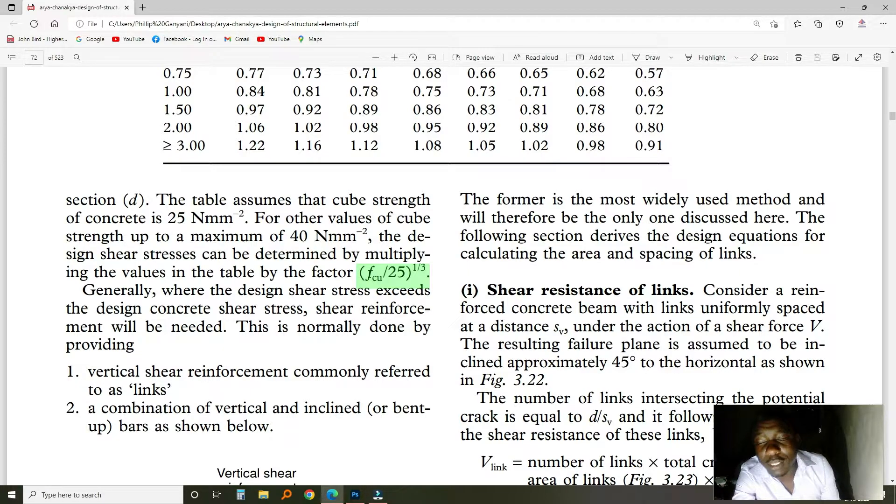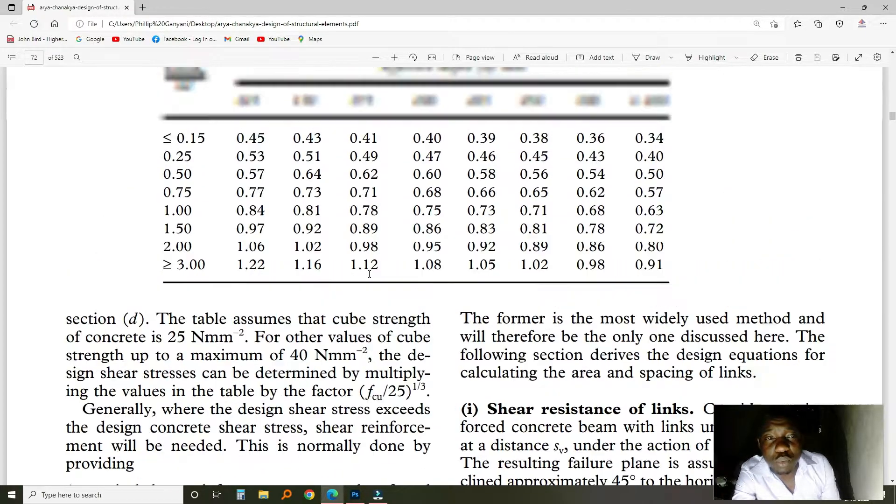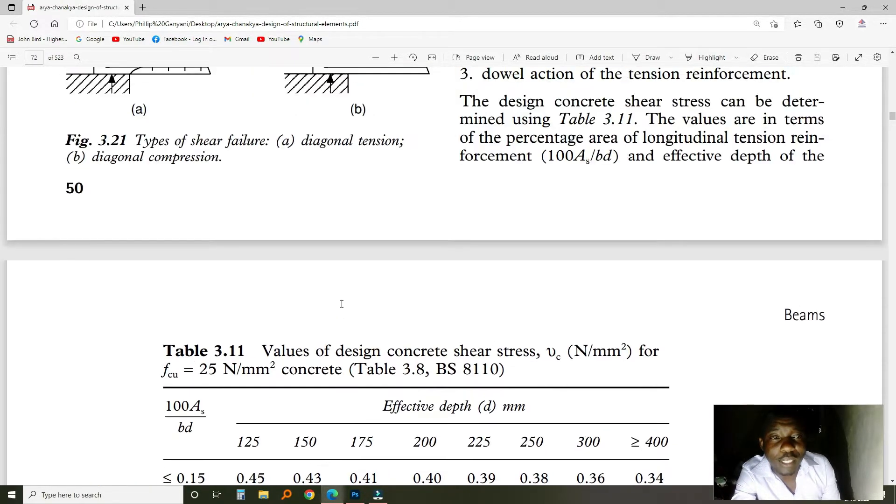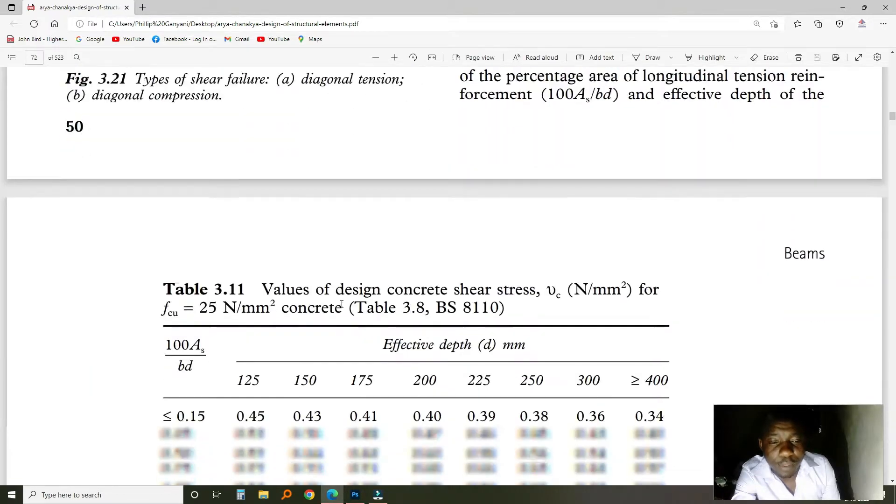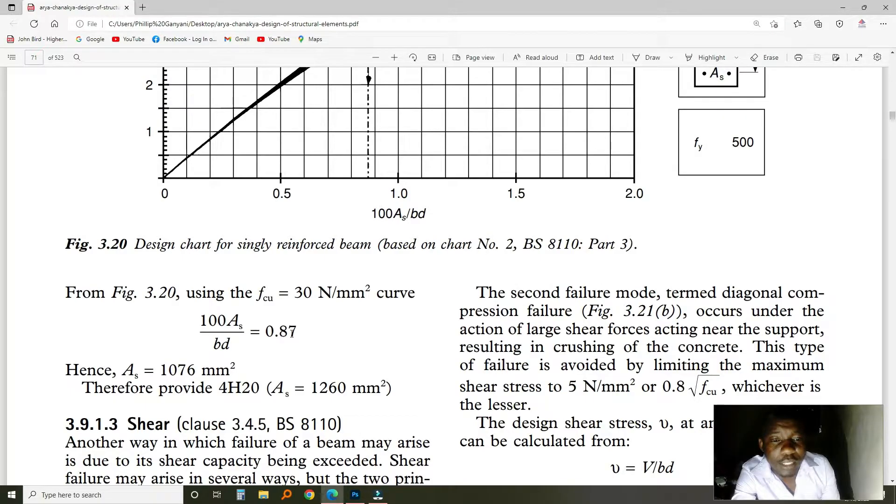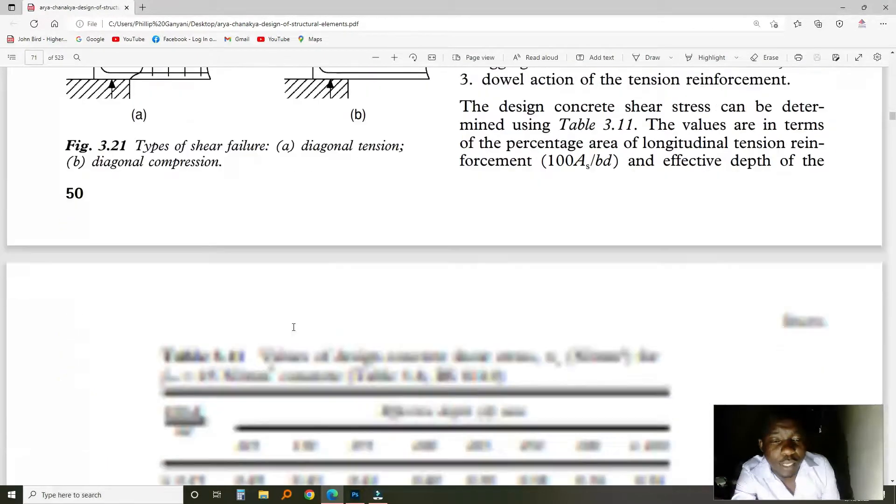If you have, let's say you were designing using grade 13, you say that grade 13 divided by 25, and then you find the cube root of that value. The number that you get, you multiply with the values in this table, so that you get the actual value for the design, as per your concrete design strength. So in this case, we have a number here, which is 0.87.